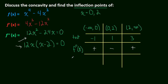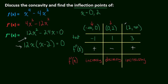So what does that mean? The slopes of the first derivative are positive on the first interval, so the first derivative is increasing — meaning the function is concave up. The slopes are negative on the middle interval, so the first derivative is decreasing — concave down. And the slopes are positive on the last interval — concave up. So we've discussed the concavity and found the inflection points.